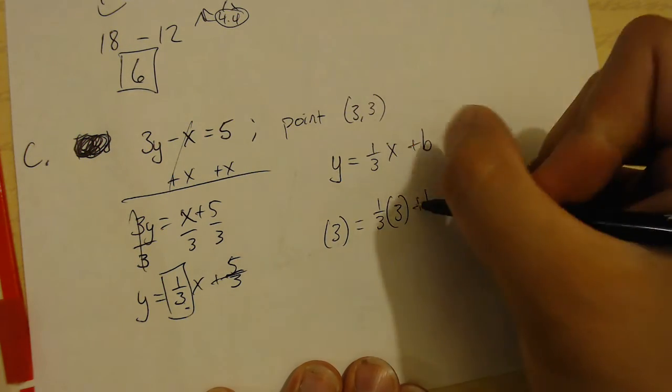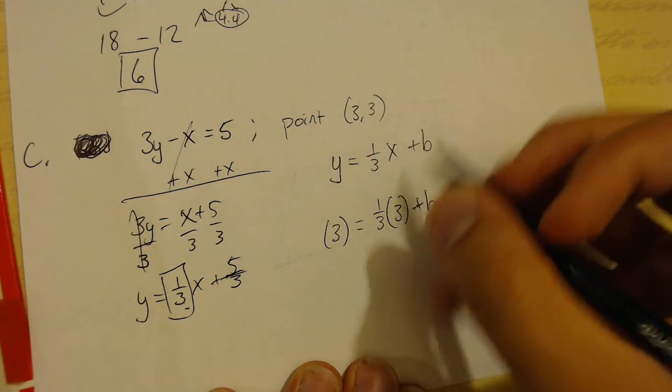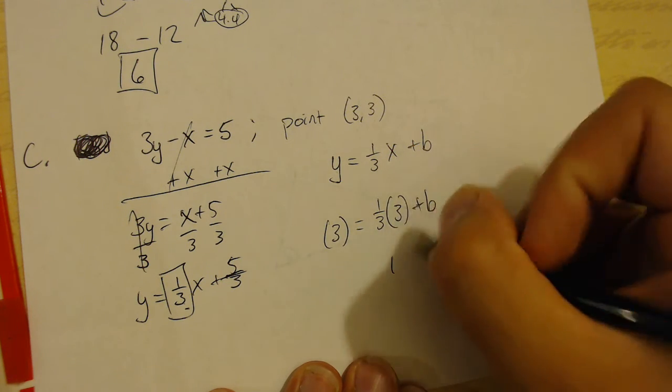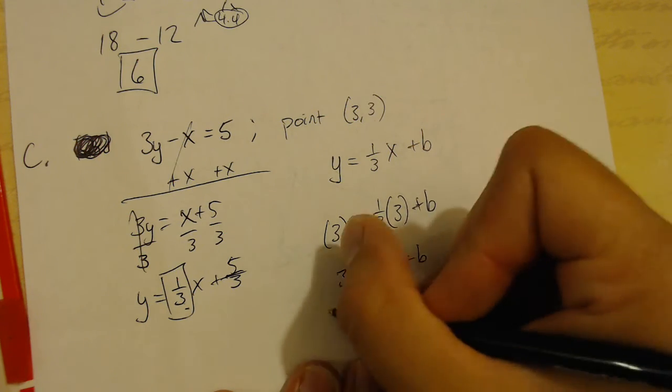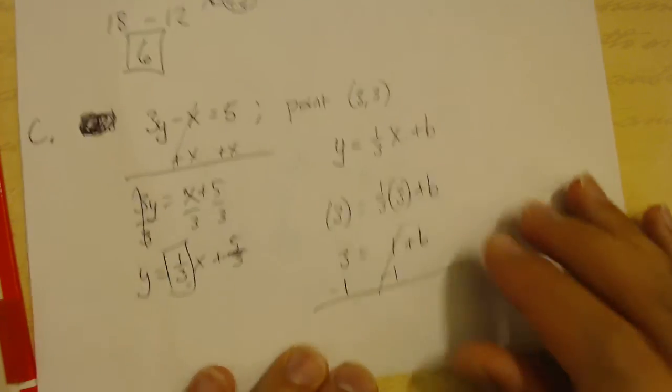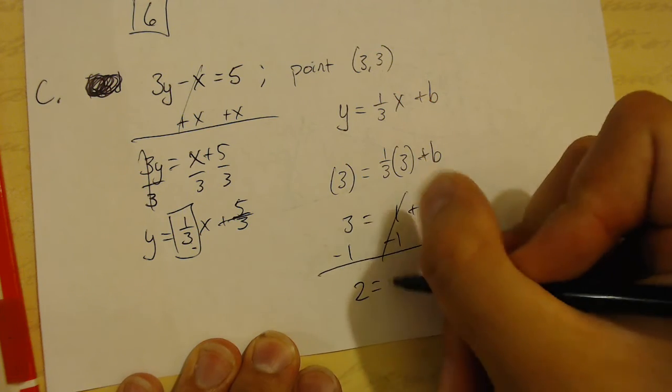Now, I can find out what b is. 3 times 1 third is just going to give me 1. So, then, I've got 3 equals 1 plus b. Subtract 1 from each side. And then b equals 2.